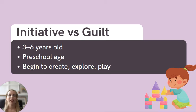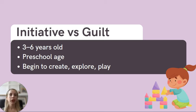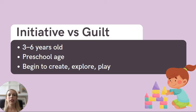Next up, we have initiative versus guilt. This stage applies primarily to preschoolers, so think from about the ages of three to six years old. During this period, children are able to create and explore, they direct their own play, and they also build a sense of confidence and pride in themselves. All of these behaviors help to build up a sense of purpose, identity, and confidence in that child.